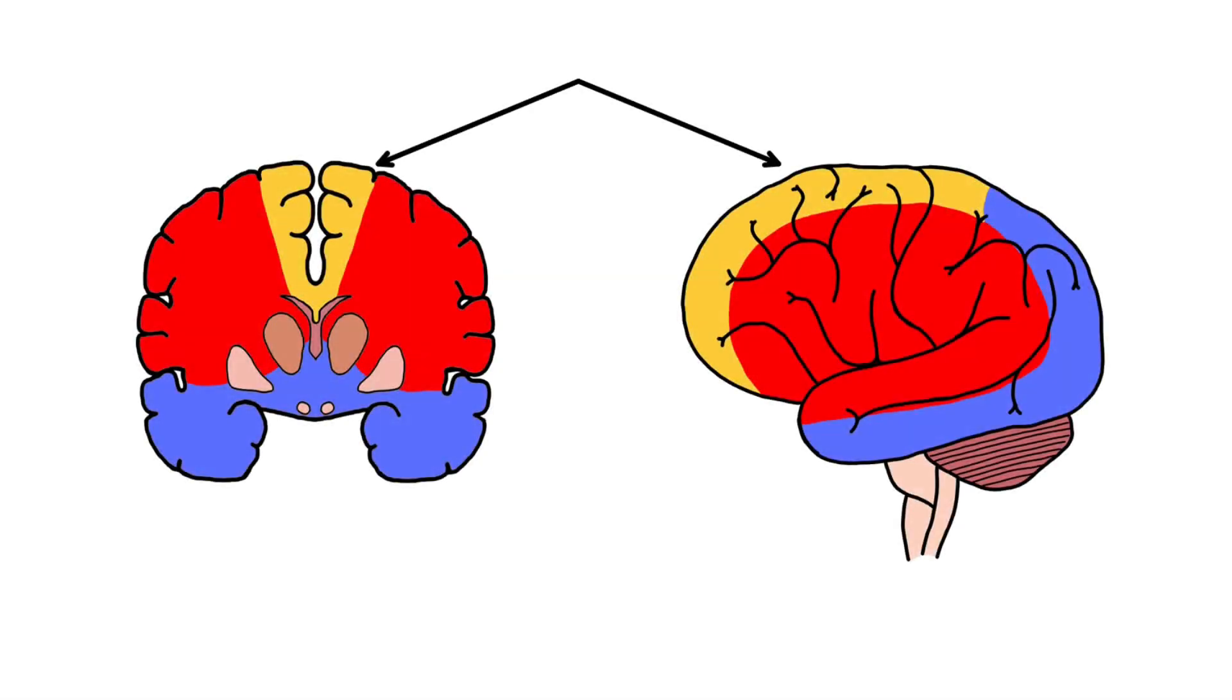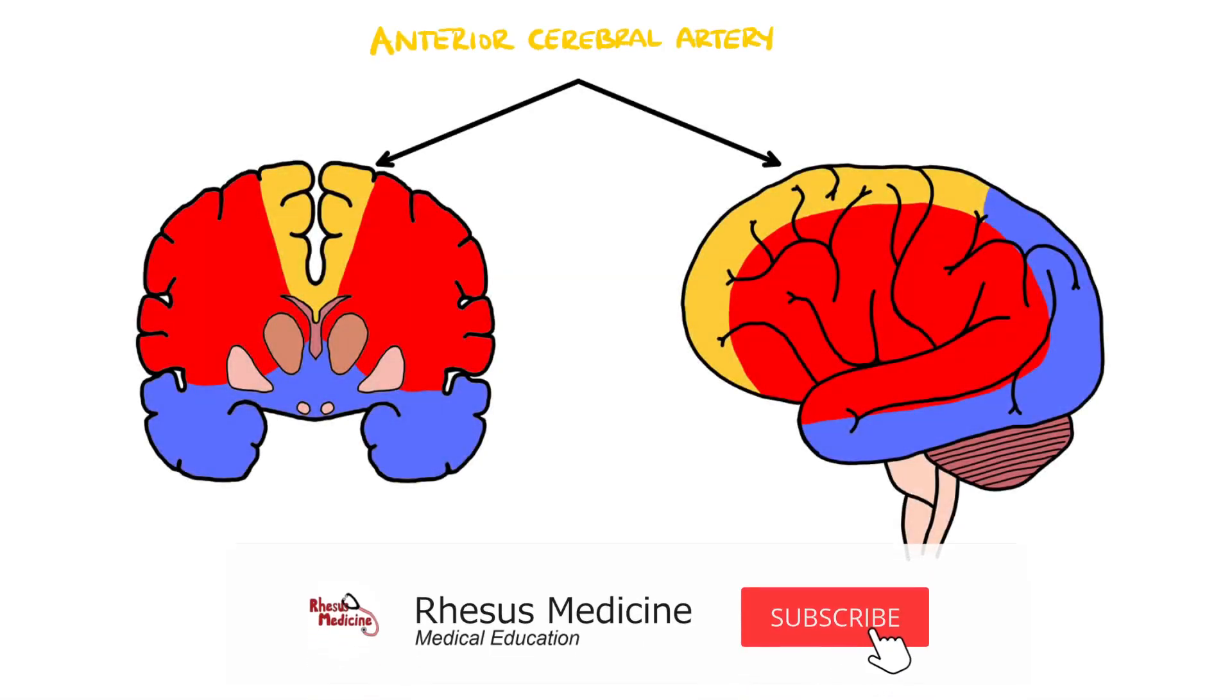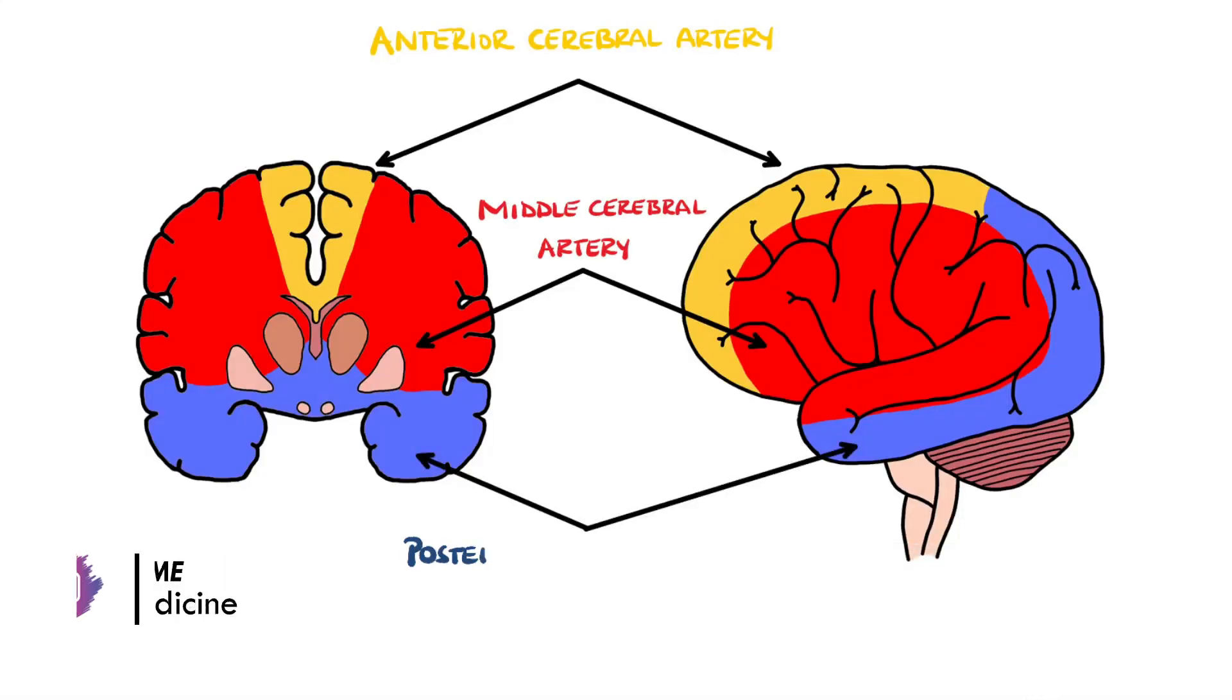Stroke syndromes are collections of signs and symptoms resulting from strokes in different regions of the brain or central nervous system. In this video we will cover the stroke syndrome associated with strokes in the territory of the anterior cerebral artery.